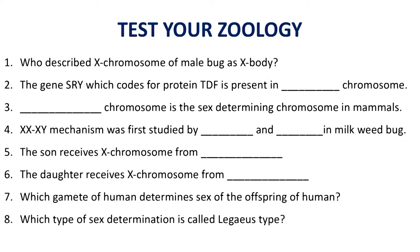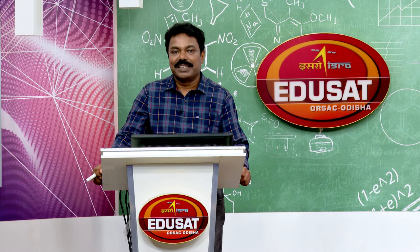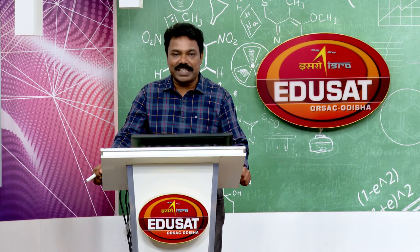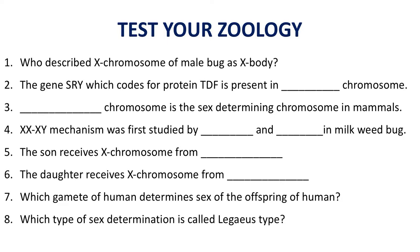The son receives the X chromosome from the mother, because he receives the Y chromosome from the father. The daughter receives X chromosomes from both parents — one from the father and one from the mother. The male gamete or sperm determines the sex of the offspring: if the fertilizing sperm carries X, the baby is a girl; if it carries Y, the baby is a boy. The XX/XY mechanism is also called the Lygaeus type.